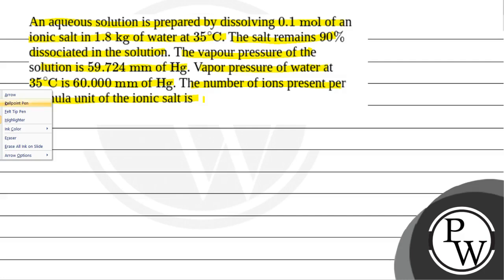Now we will discuss the key concept. We have an aqueous solution which has 0.1 moles of ionic salt dissolved in 1.8 grams of water as the solvent. The degree of dissociation is 90%. The vapor pressure of the solution is 59.724 mm of Hg, and the vapor pressure of pure water is 60 mm of Hg.